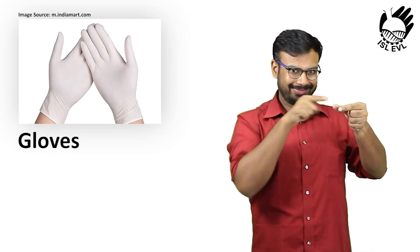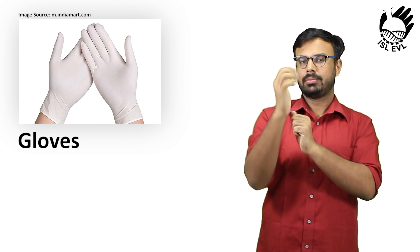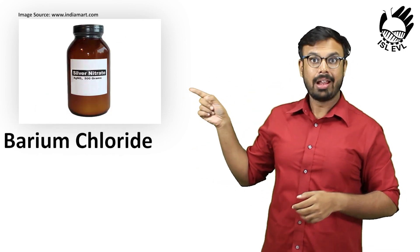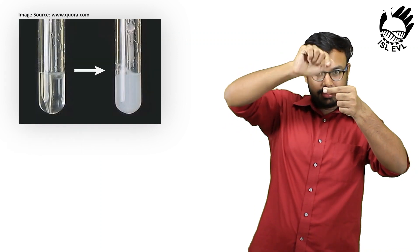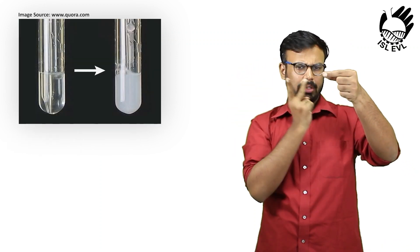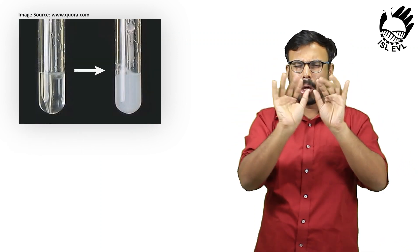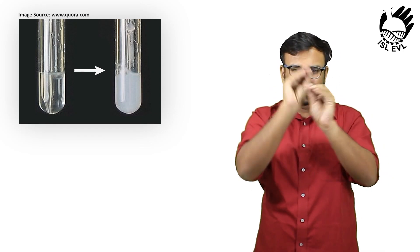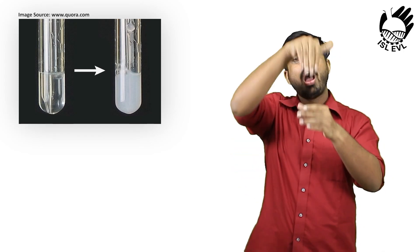To the first test tube, add a few drops of silver nitrate as shown on the screen. Do remember to wear your gloves. If your clear solution gets cloudy, your sample must contain chloride as the non-metal part.